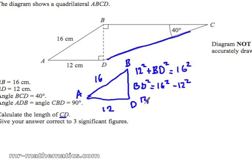Taking the square root of both sides, BD becomes the square root of 112. Working that out, BD is 10.58.